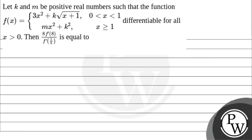Now we use differentiability. For that, we differentiate for x < 1. This will be 3(2x) + k/(2√(x+1)). At x = 1, this equals 6 + k/(2√2).